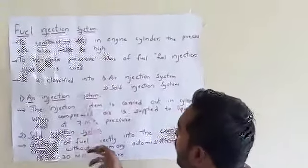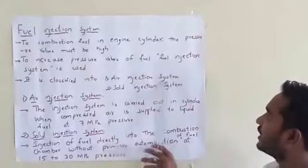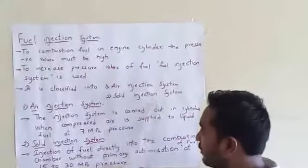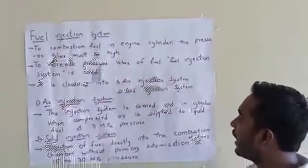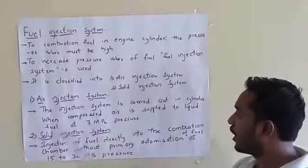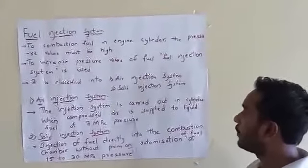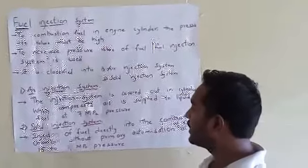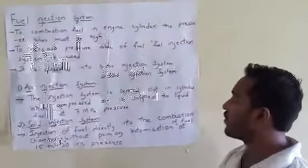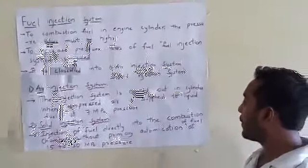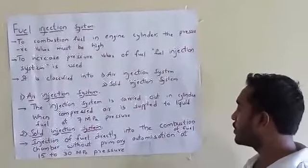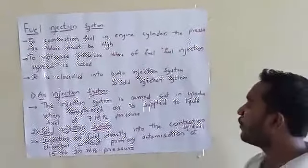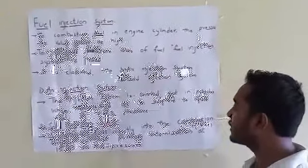The fuel injection system is classified into two types: the air injection system and the solid injection system. In the air injection system, injection is carried out in the cylinder when compressed air is supplied to the liquid fuel at 7 megapascal pressure. In the solid injection system, fuel is injected directly into the combustion chamber without primary atomization at 15 to 30 megapascal pressure.